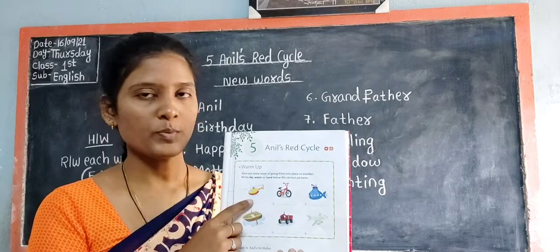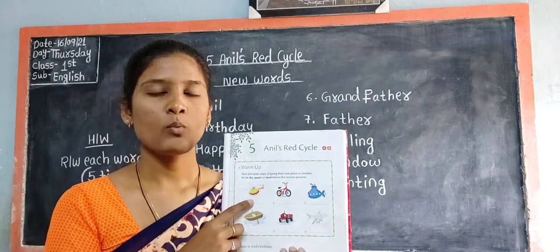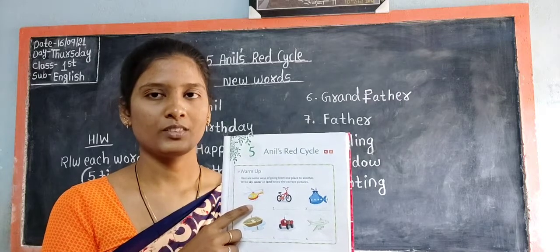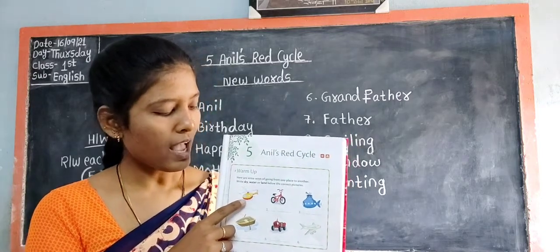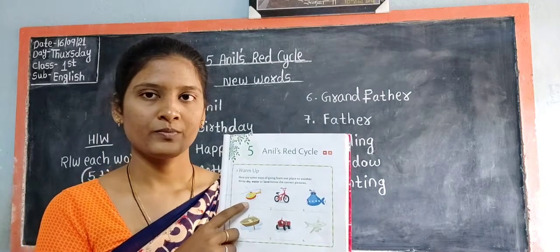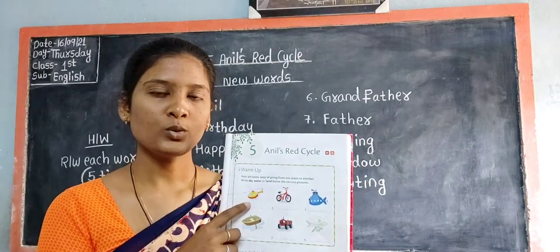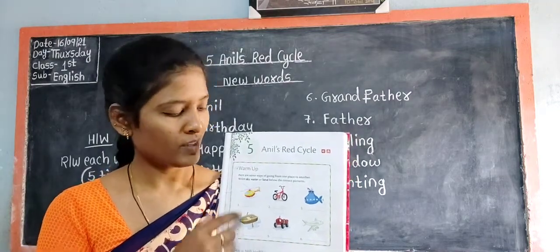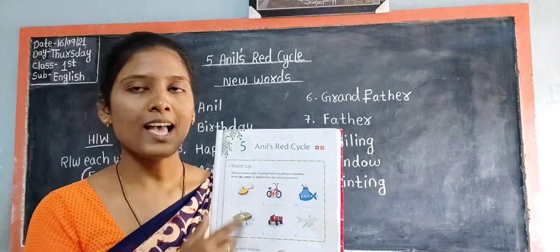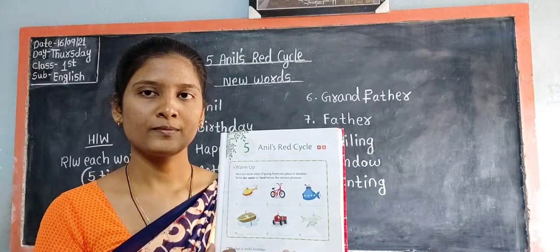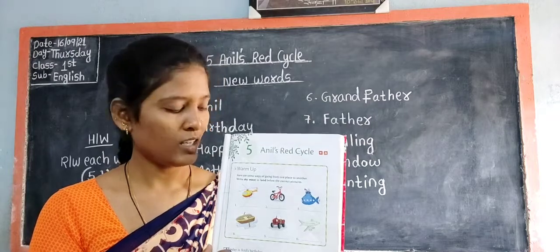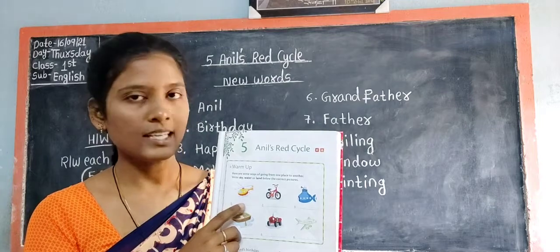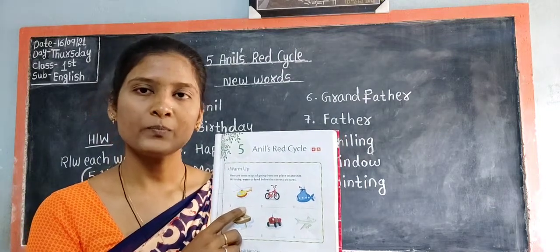Look at the first picture children. What can you see in the first picture? The first picture is of a helicopter. So tell me children, through which way does it move from one place to another — sky, water, or land? Sky. So write sky in the blank: S-K-Y. Sky.